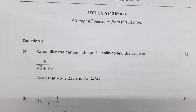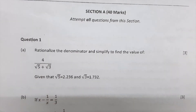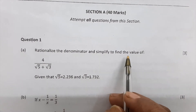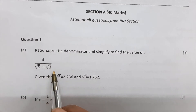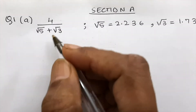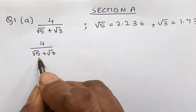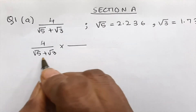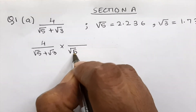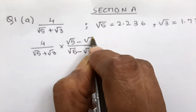Question 1 of Section A starts with rationalizing. We have 4 upon (√5 + √3) and we have to simplify this fraction; the values of √5 and √3 are given. We rationalize by multiplying with (√5 − √3) over (√5 − √3), because the denominator is of the form A + B and we rationalize with A − B.